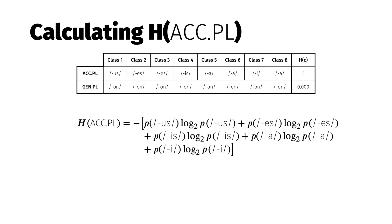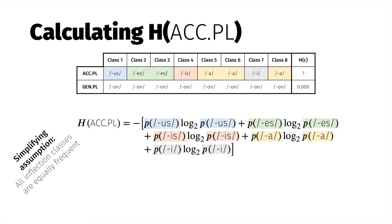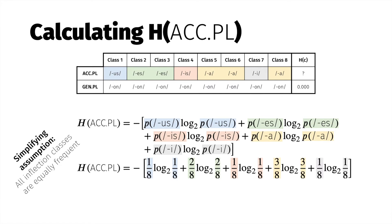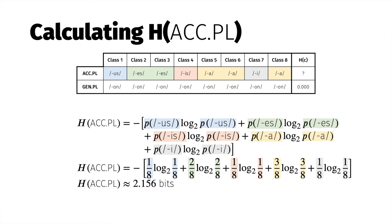What about the accusative plural cell? There are five possible suffixes that can appear there: /us/, /s/, /is/, /a/, and /e/. Their actual probabilities could be estimated by calculating the proportion of Greek nouns belonging to each inflection class, but instead we'll assume all inflection classes are equally likely — remember that equal probabilities maximize entropy, so this gives us the upper bounds of Greek's inflectional complexity. Since only one out of eight inflection classes uses the accusative plural suffix /us/, while three classes use /a/, we replace those terms accordingly. Filling in all the probabilities yields an entropy of 2.15 bits for the accusative plural cell.